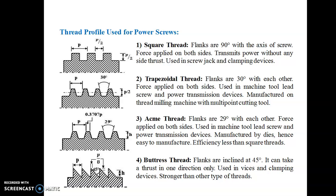Various commonly used thread profiles include: Square thread — flanks are at 90 degrees with the axis of the screw, force is applied on both sides, transmits power without side thrust, used in screw jacks and clamping devices. Trapezoidal thread — the angle included by the flanks is 30 degrees, force is applied on both sides, used in machine tools, lead screws, and power transmission devices, manufactured by milling machine.